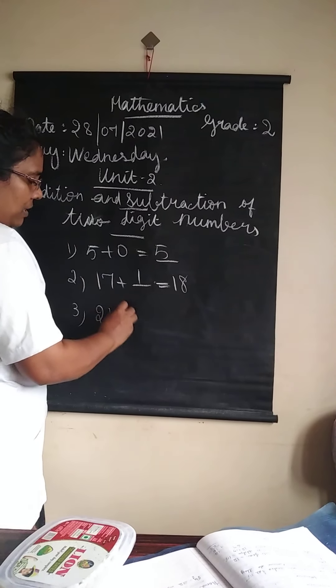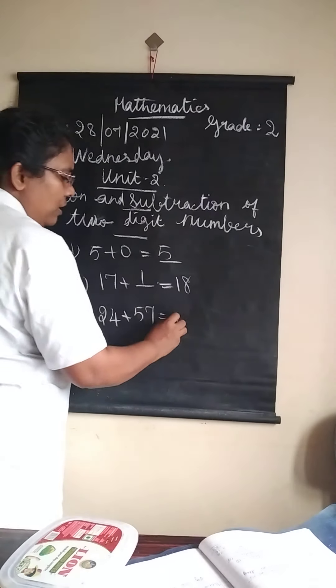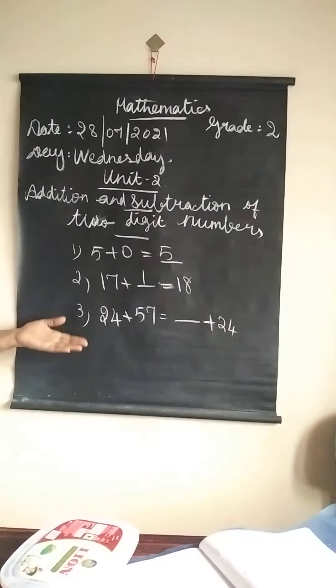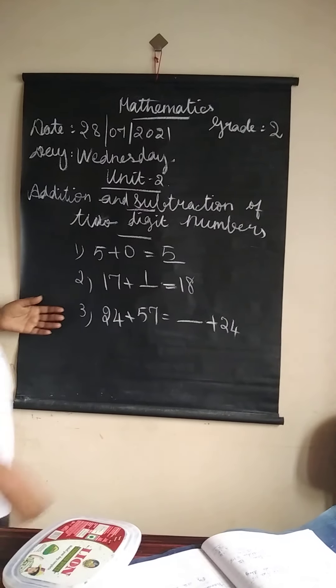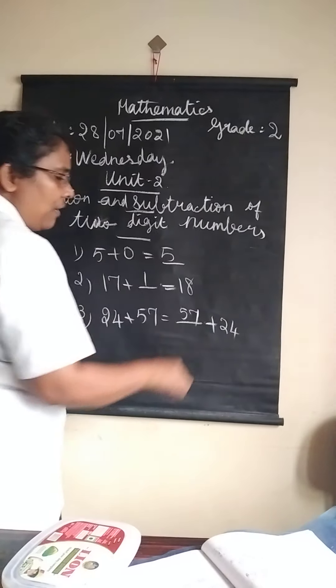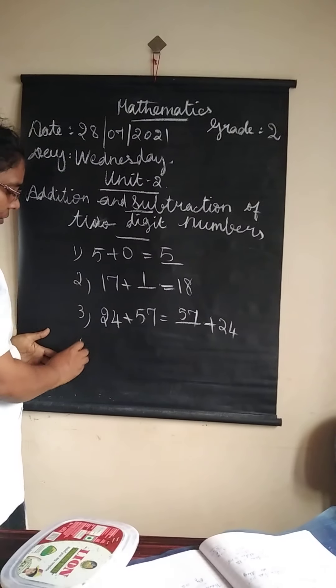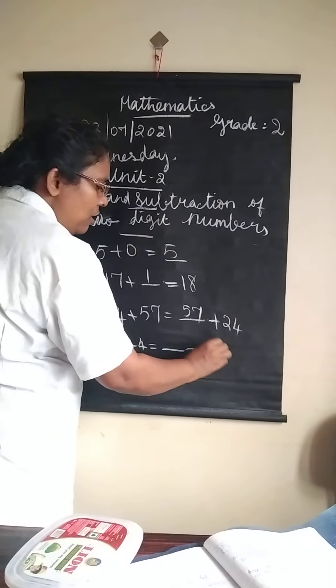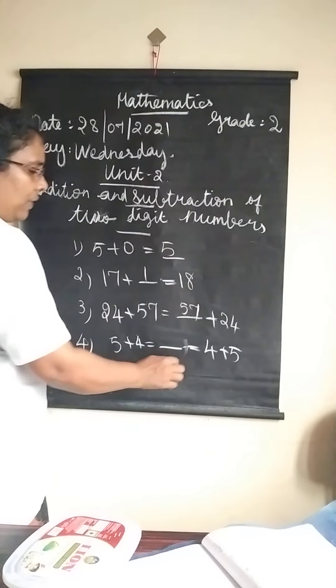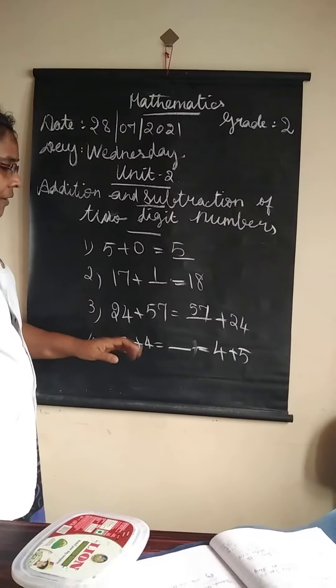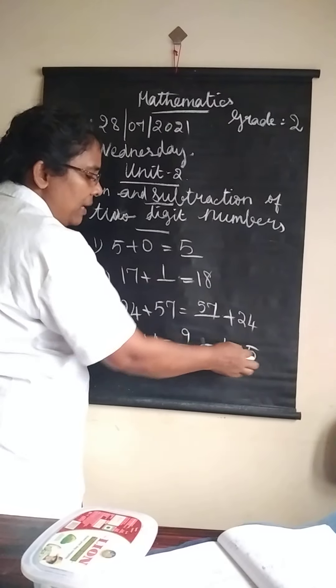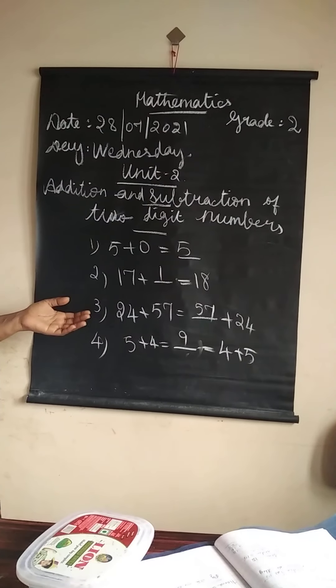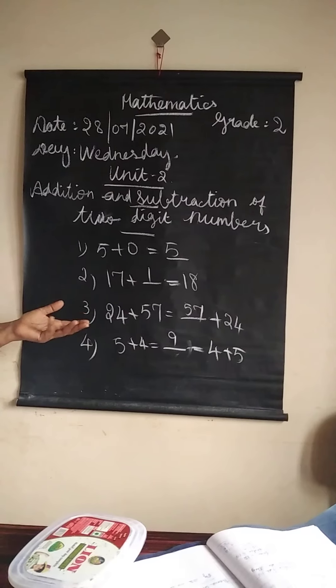24 plus 57 equals blank plus 24. What will come here? The answer is 57. Listen to the next question: 5 plus 4 equals blank equals 4 plus 5. What will come here? If you add 5 plus 4, the answer is 9. Similarly, 4 plus 5 is also 9. Are you clear on fill-ups?